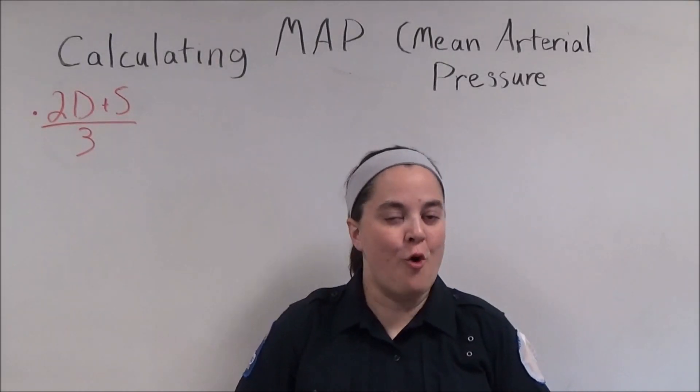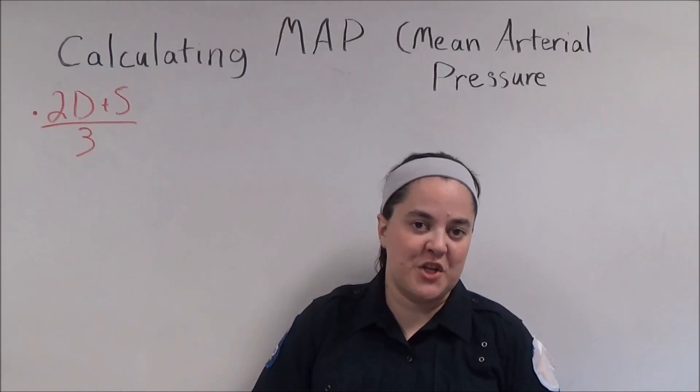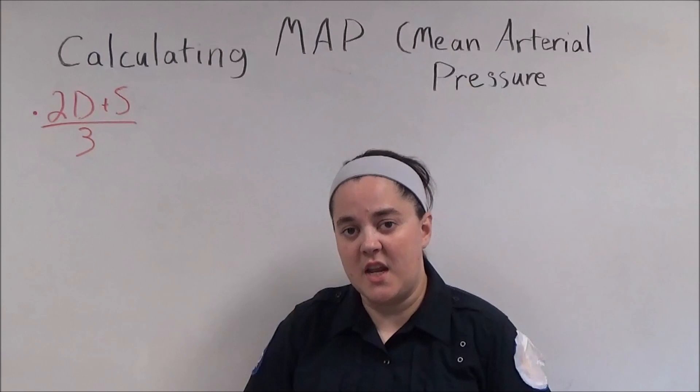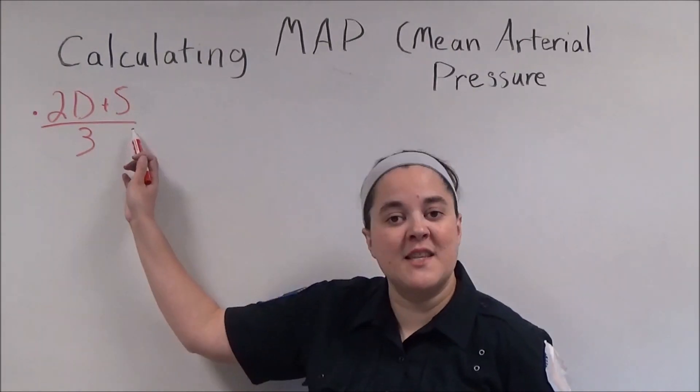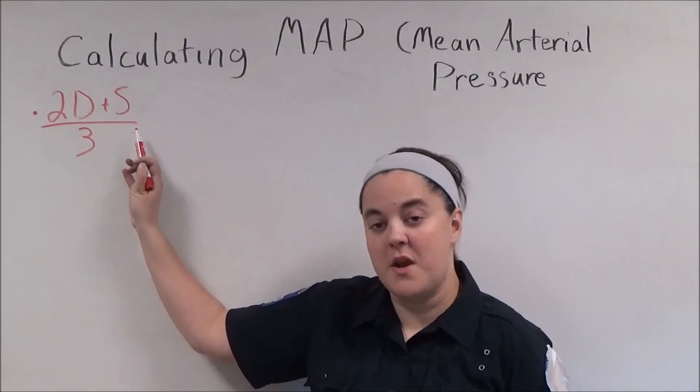A patient's MAP, or mean arterial pressure, is a single number representation of the patient's average blood pressure. This can be calculated using the formula: 2 times the diastolic plus the systolic divided by 3.